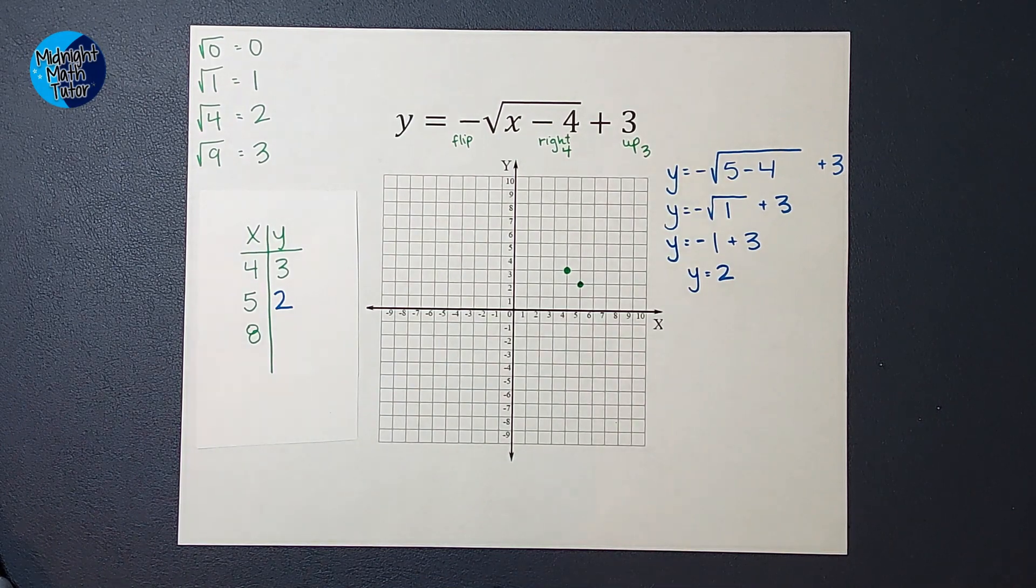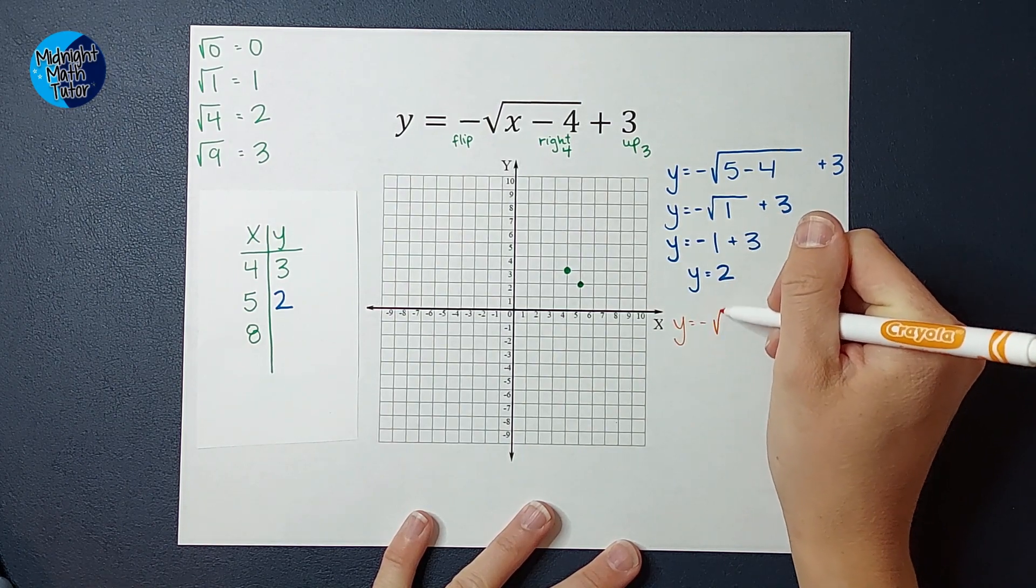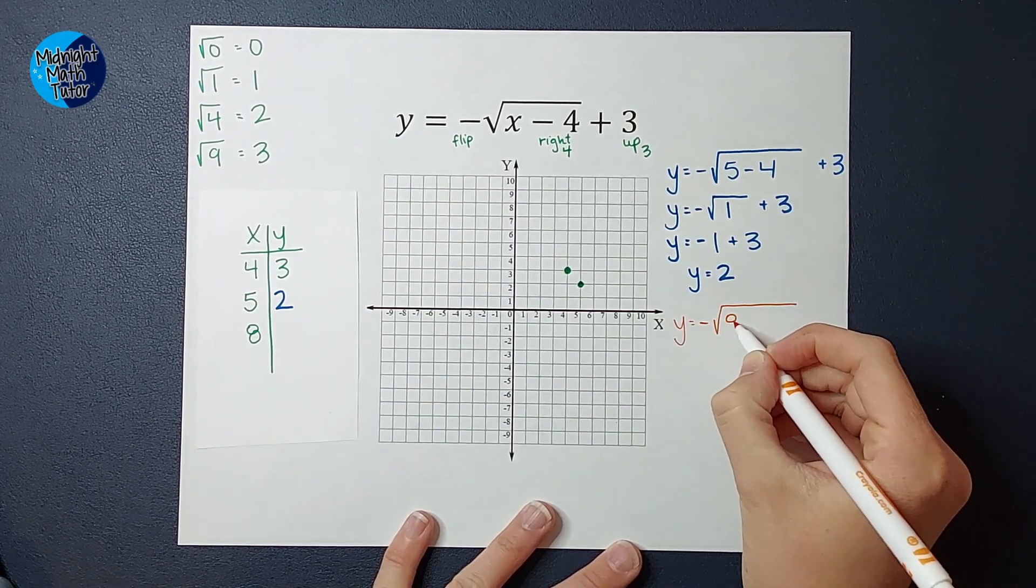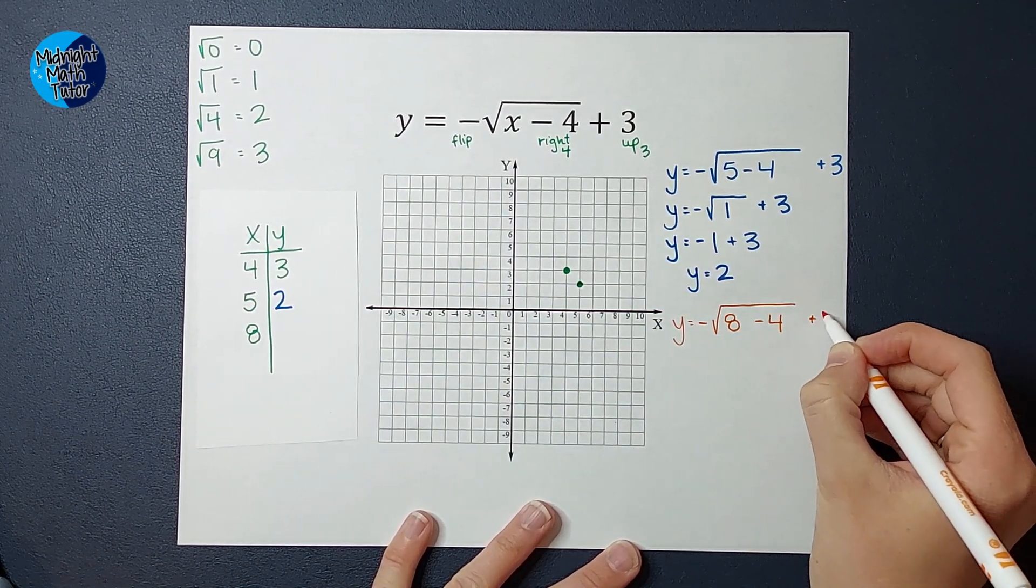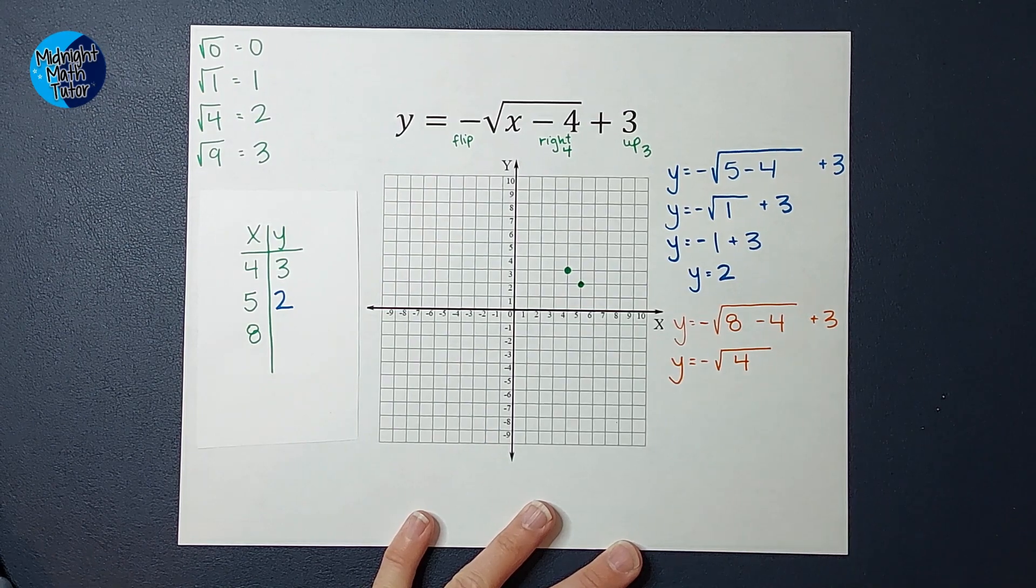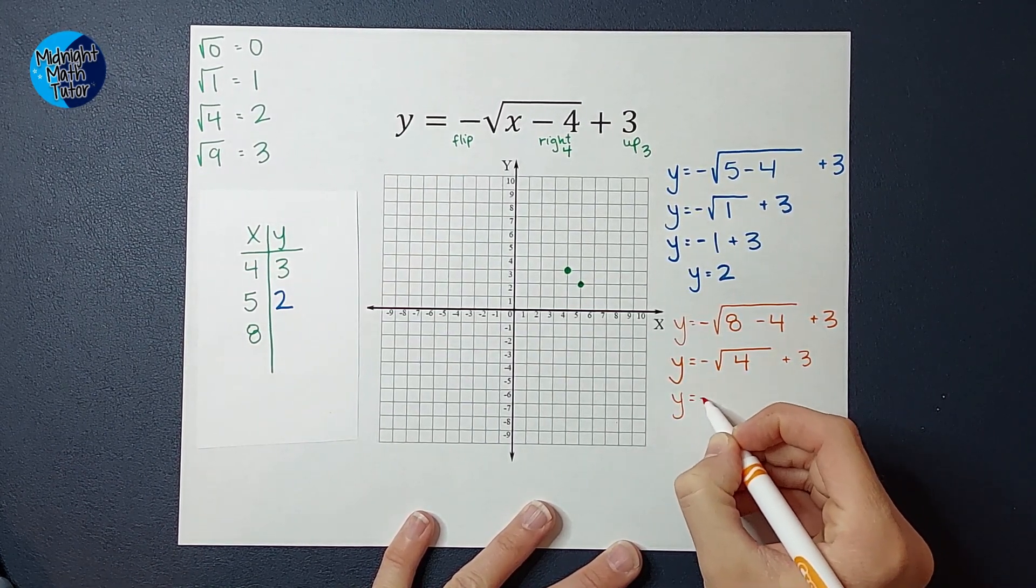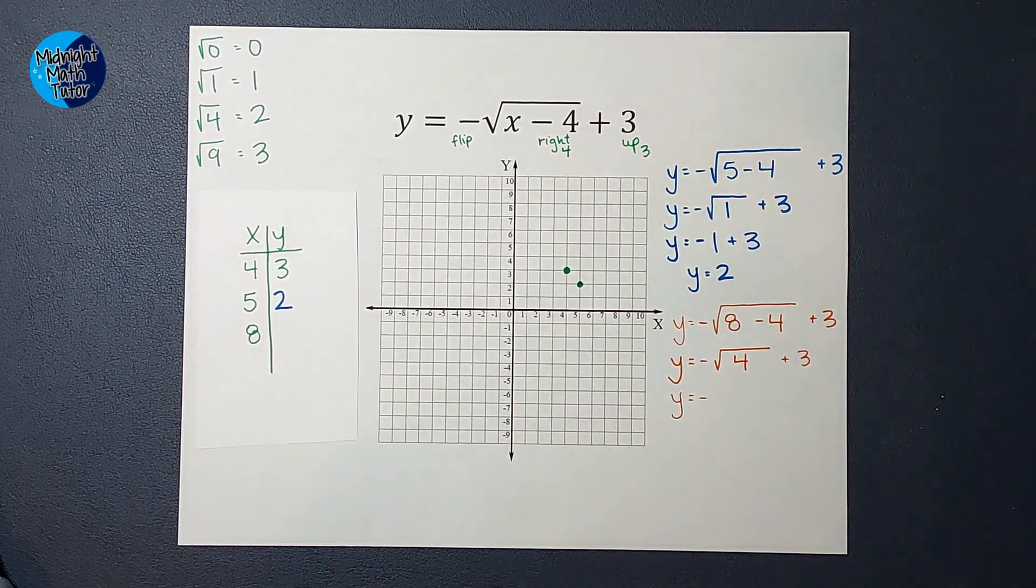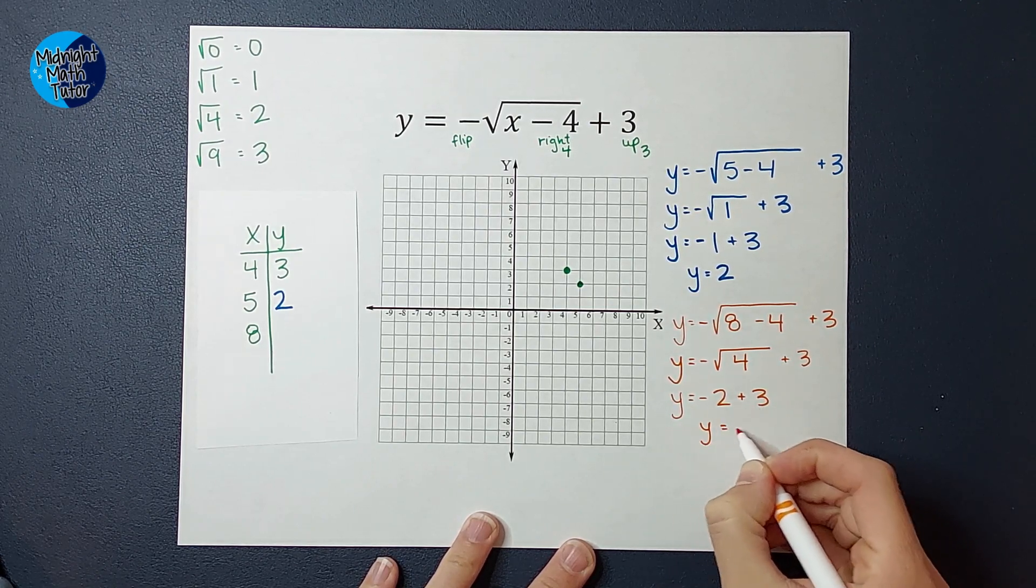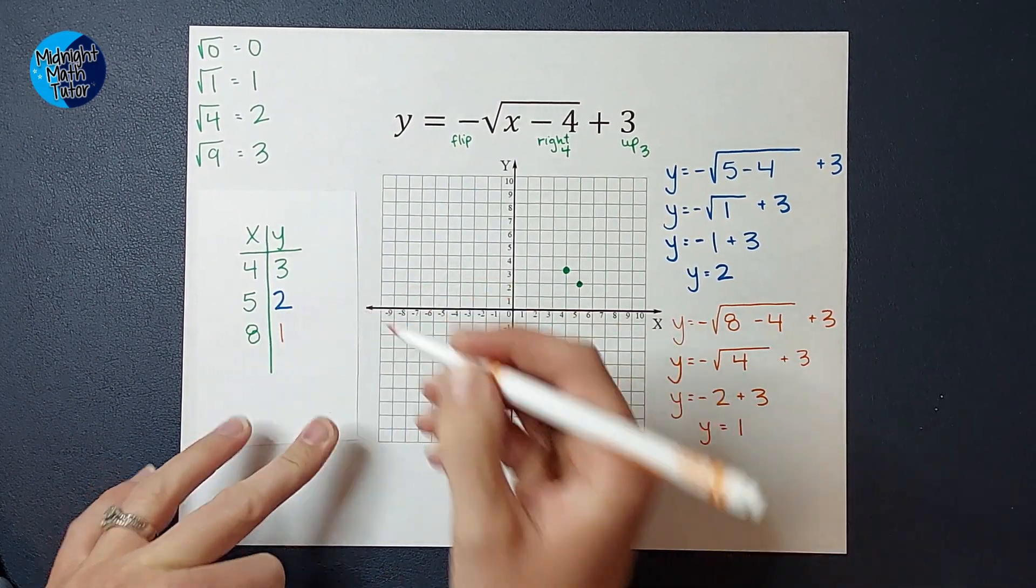Let's go ahead and plug in one more point. We're going to plug in 8. So I get y equals the negative square root of x. We're plugging in 8 minus 4 plus 3 on the outside. I've got the negative square root of 8 minus 4 is 4. See why I picked 8 plus 3. And then I get y equals the negative square root of 4 is 2. And then I still have that negative there. So it's going to be negative 2 plus 3. So I get y equals 1. So when I plugged in 8 for x, I got 1 for y.